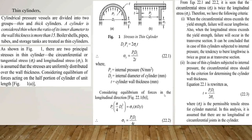From equations 22.1 and 22.2, we see that the circumferential or tangential stress sigma-t is twice the longitudinal stress. Therefore, when the circumferential stress exceeds the yield strength, failure will occur lengthwise. Also, when the longitudinal stress exceeds the yield strength, failure will occur in the transverse section.